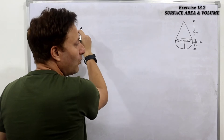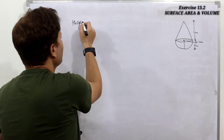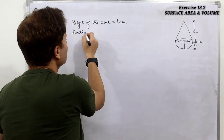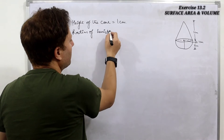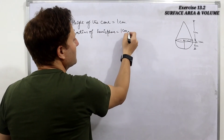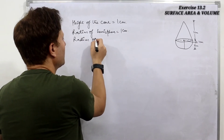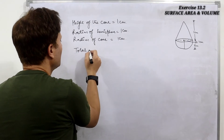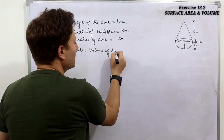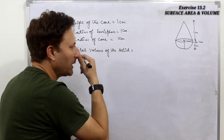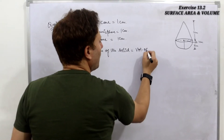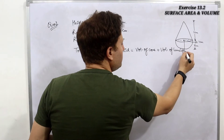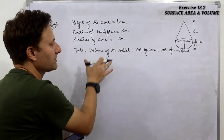Let's note what is given: height of the cone is 1 centimeter, radius of the hemisphere is 1 centimeter, and the radius of the cone is also 1 centimeter. We have to find the total volume of the solid, which means volume of cone plus volume of hemisphere, because these two together complete the solid.